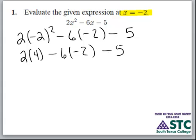Our next step of multiplication can be carried out. 2 times 4 is 8. Negative 6 times negative 2 is positive 12. And then we carry down the negative 5.